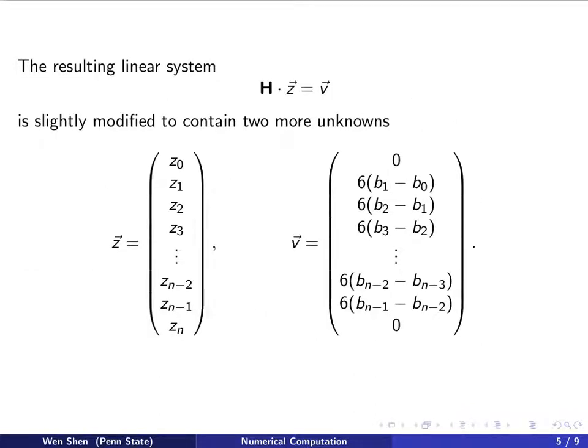Now putting these two equations together with all the equations for the inner knots, we get a linear system as we did for the natural cubic spline, H times z equals v. Here the system is slightly modified to contain two more unknowns because now z_0 and z_n, they are unknown, so we collect them in the unknown vector. And the v-vector is also longer, containing the first 0 and the last 0.